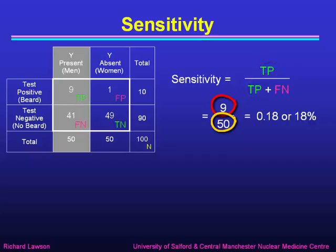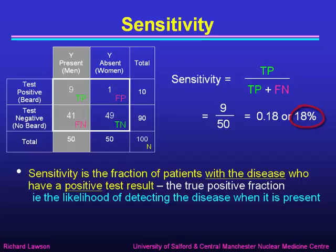9 over 50 is 0.18 or 18%. You can think of sensitivity as the fraction of patients with the disease — those in the left-hand column where syndrome Y is present — who have a positive test result. It's therefore sometimes known as the true positive fraction. It's the likelihood of detecting the disease when we know it's present. We confine our attention to the left-hand column and work out what fraction we detected correctly. That's why it's called sensitivity: how good the test is at finding the disease.